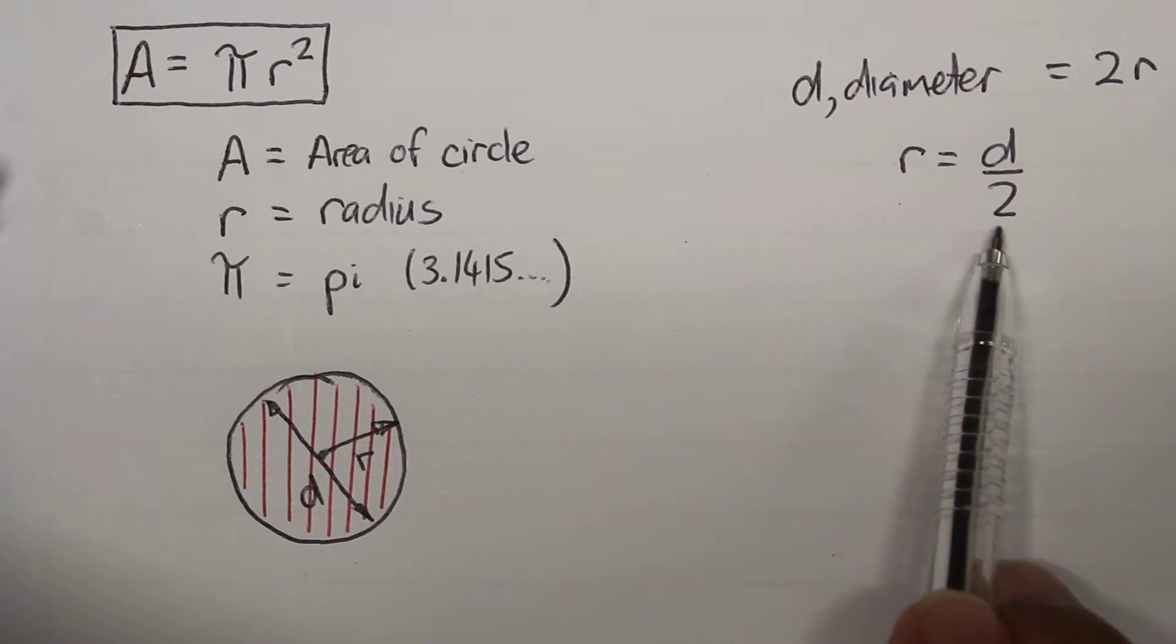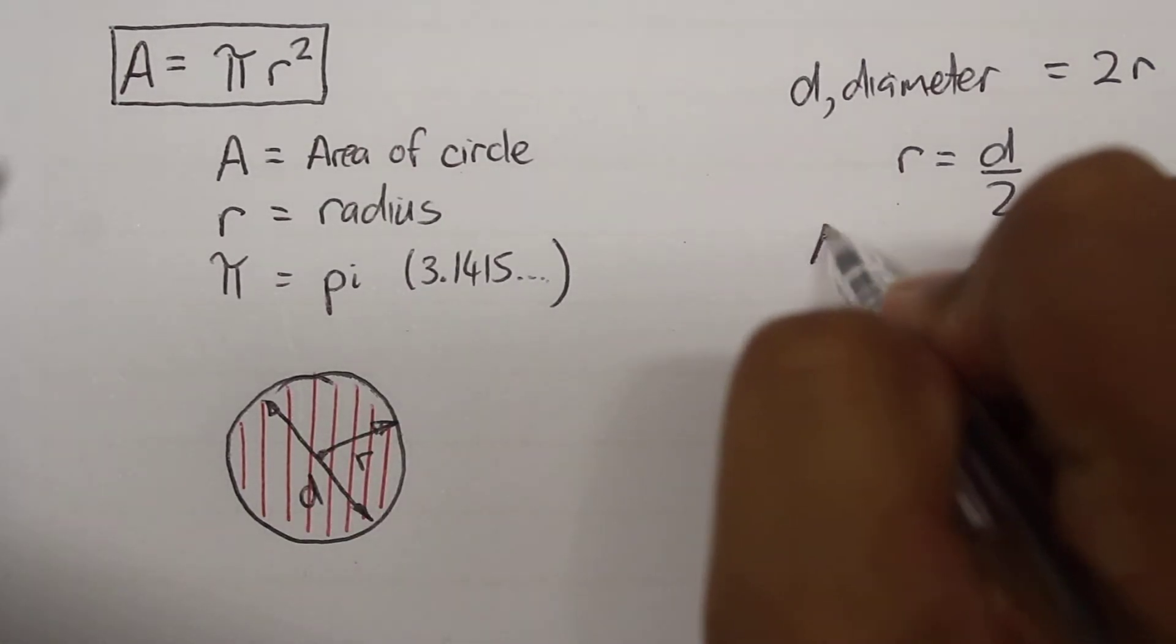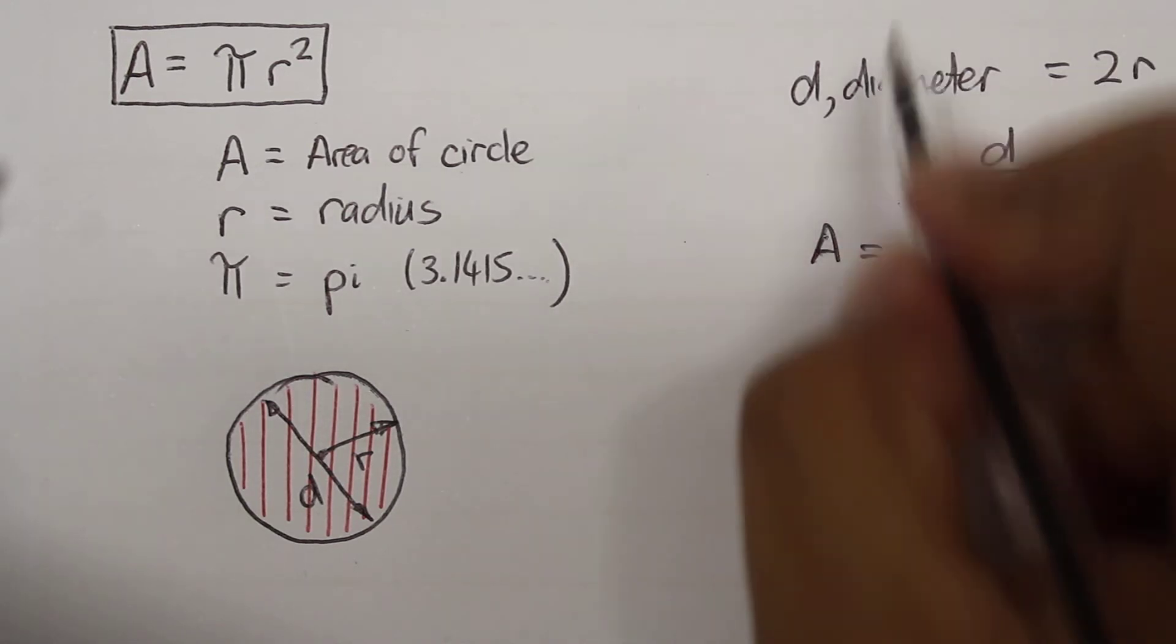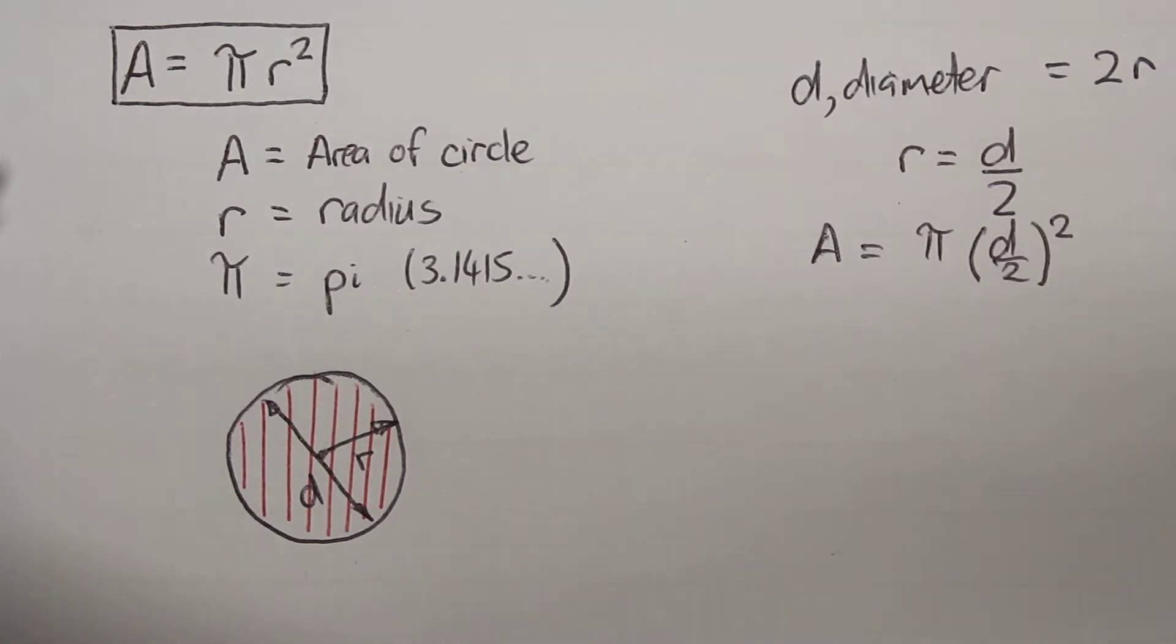And then we can substitute that into the equation for area of a circle. So A is equal to pi times d over 2, and that's all squared.